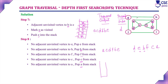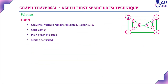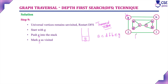Restart the DFS procedure and consider the starting vertex as G. Push G into the stack and mark G as visited. The traversal output is now A, C, D, F, B, E, G. The popped order so far is D, E, B, F, C, A — this is the popped order of vertices from the stack for the first component.